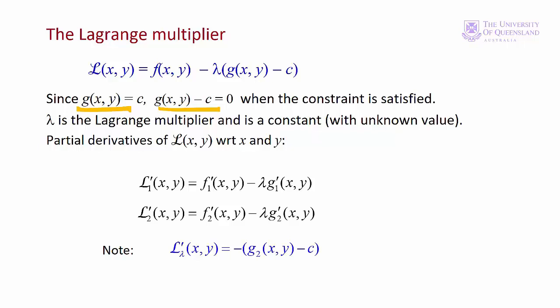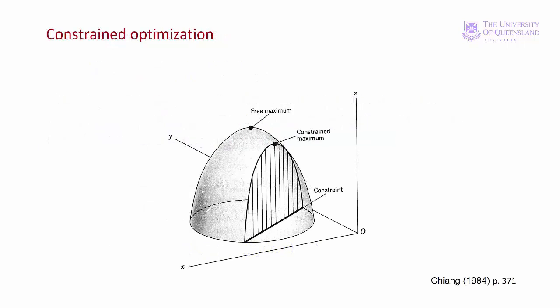Let's look at that on a diagram. Here we have the constraint on the xy plane, and we can write that g(x,y) minus c equals zero. The objective function is constrained to follow this line in the xy plane — that's what the Lagrangian function does. The optimal value of the constrained objective function lies somewhere along this line. If we apply the first order conditions to the Lagrangian along this line, we'll find the local maximum or minimum. In this case we have a concave function, so it would be the constrained maximum.